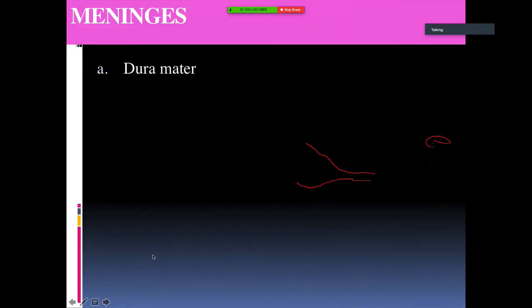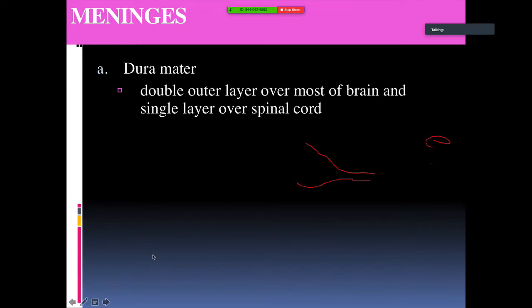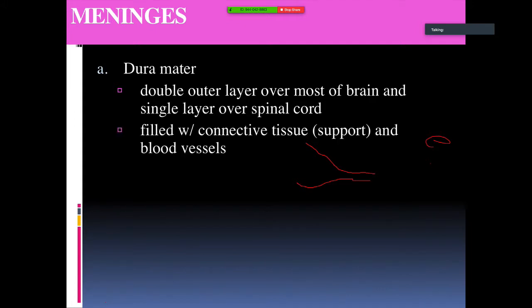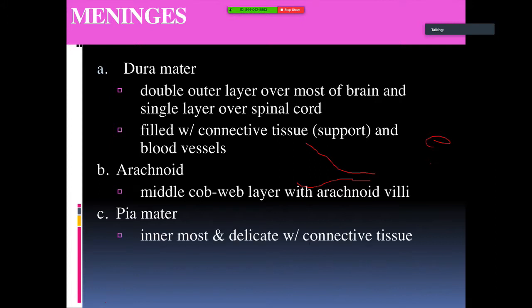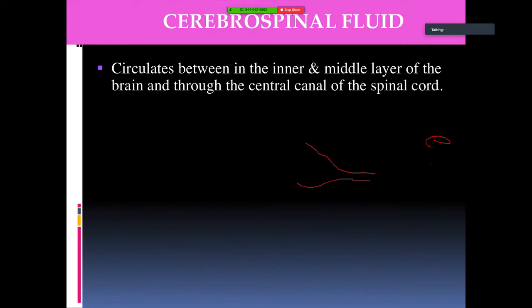The dura mater is a double outer layer over most of the brain and a single layer over the spinal cord, filled with connective tissue and blood vessels. The arachnoid is the middle cobweb layer with arachnoid villi. The pia mater is the innermost and most delicate layer, containing connective tissue.